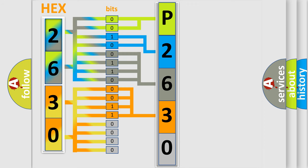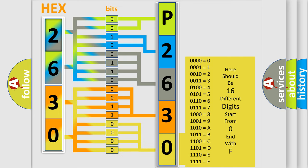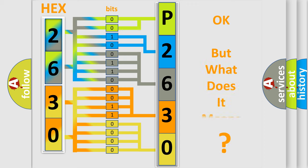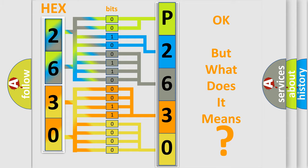A single byte conceals 256 possible combinations. We now know in what way the diagnostic tool translates the received information into a more comprehensible format. The number itself does not make sense to us if we cannot assign information about what it actually expresses. So, what does the diagnostic trouble code P2630 interpret specifically for Infiniti car manufacturers?